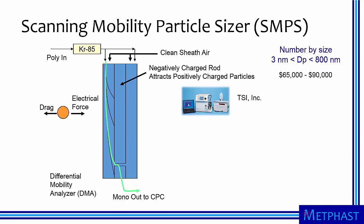The scanning mobility particle sizer uses electrical forces to size submicrometer aerosols. Aerosol is first neutralized and then passed through the outside wall of a column in an electrostatic size classifier. A clean sheath air is passed over a negatively charged rod.